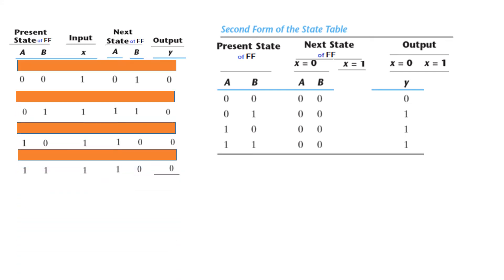After hiding the X = 0 rows, the remaining rows show X = 1 values. We copy these next state values — 0,1 / 1,1 / 1,1 / 1,0 — and the Y output values: 0, 0, 0, 1 into the X = 1 columns. This compact format is more popular, so we adopt it. The technique of extracting by input value makes filling it in straightforward.